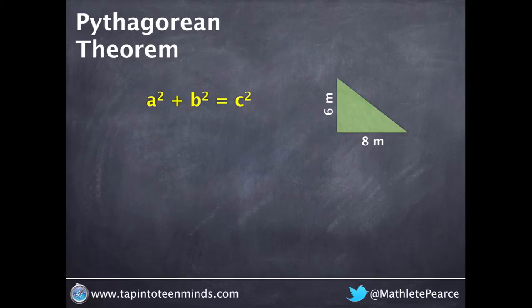This right angle triangle has 6cm and 8cm legs. We're going to use Pythagorean Theorem to find the length of the hypotenuse.